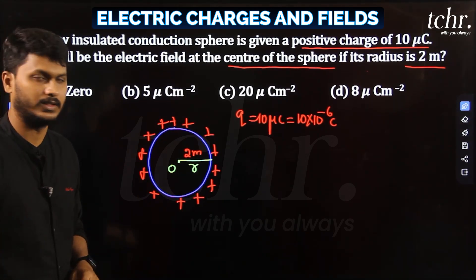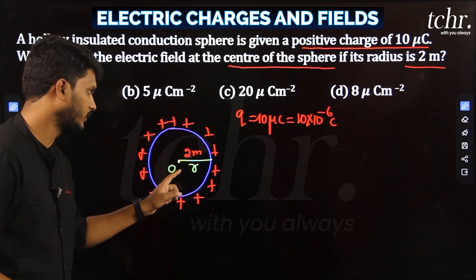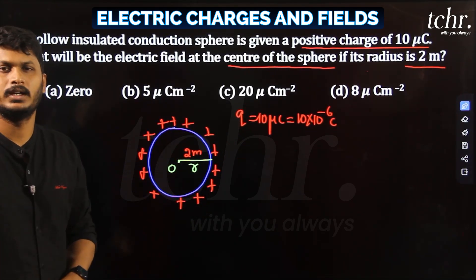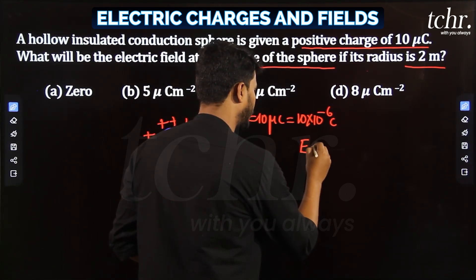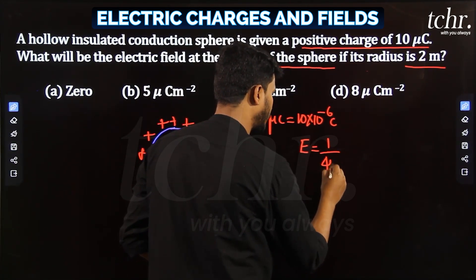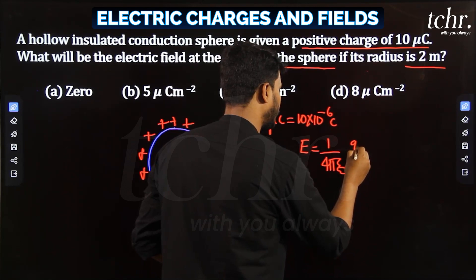Now you might go to the formula for electric intensity. The formula is E = 1/(4πε₀) × q/r².